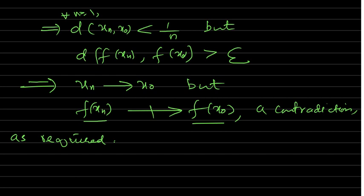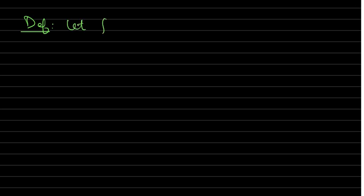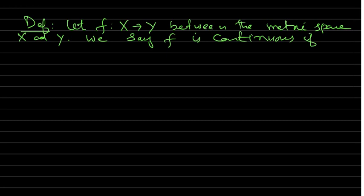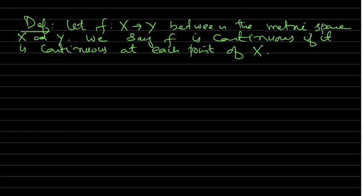This was the first theorem on continuity. We say f is continuous on the whole space if it is continuous at each point of X.